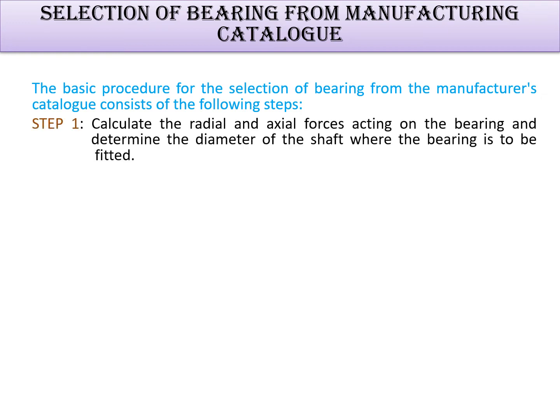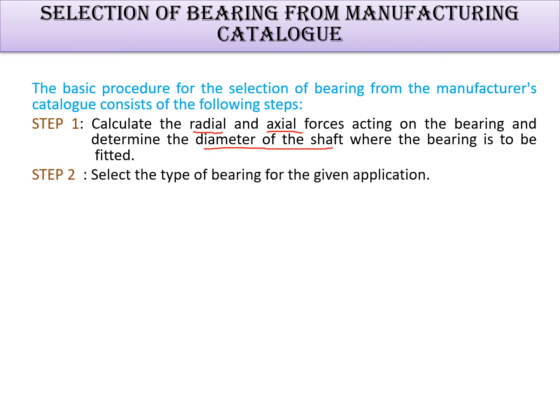The first step is to calculate the radial and axial forces acting on the bearing, and to determine the diameter of the shaft where the bearing is to be fitted. The shaft diameter and the radial and axial forces are the key inputs required at this stage.